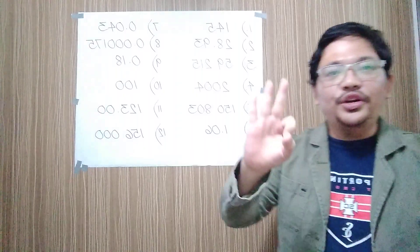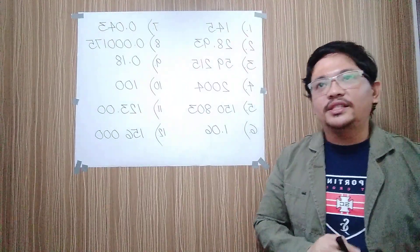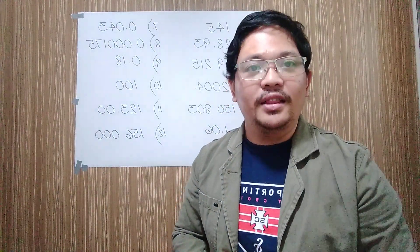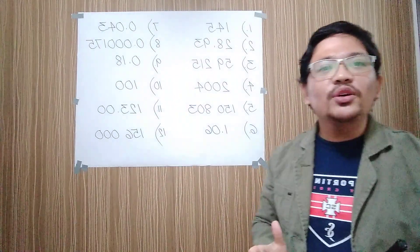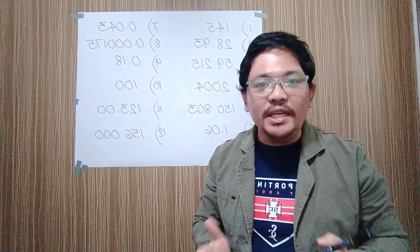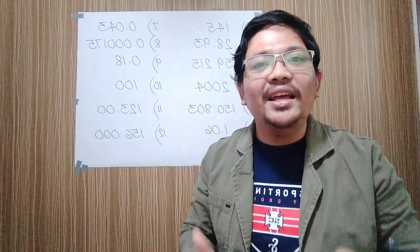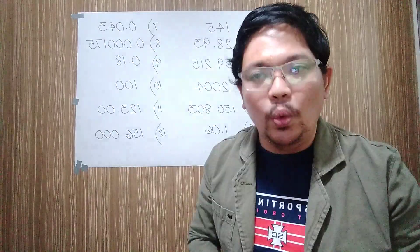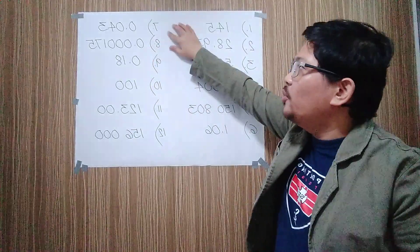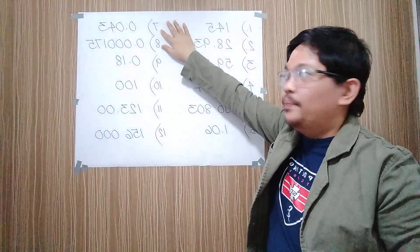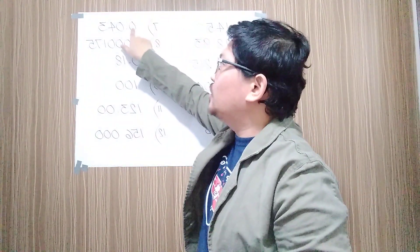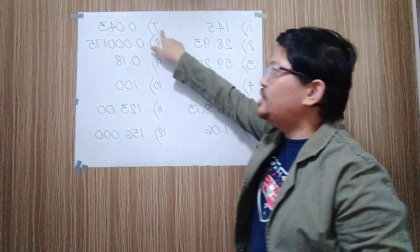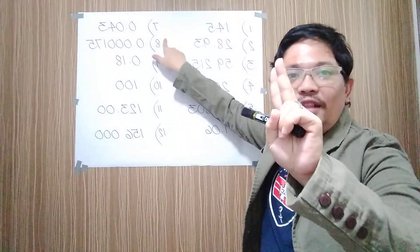The third rule says that leading zeros are never significant. Leading zeros are also known as beginning zeros — these are the zeros located at the beginning of a number or at the beginning of any quantity. For example, we have 0.043. In 0.043, the two zeros here are not significant. Therefore, for number seven, there are two significant figures only.